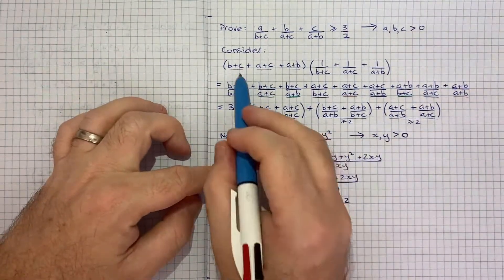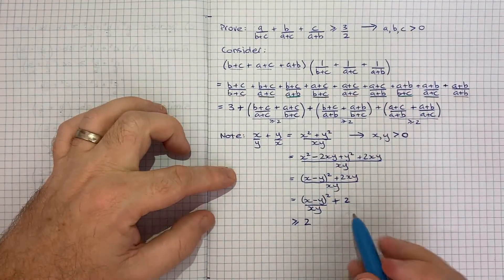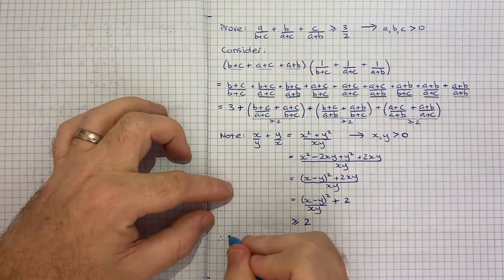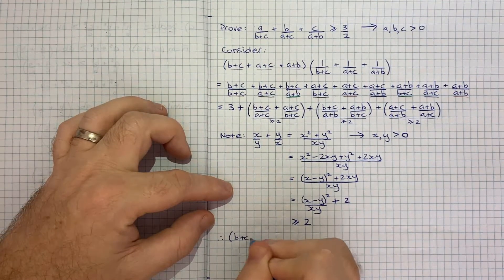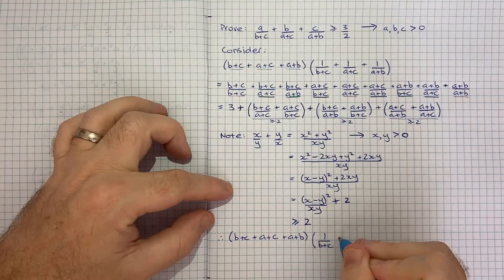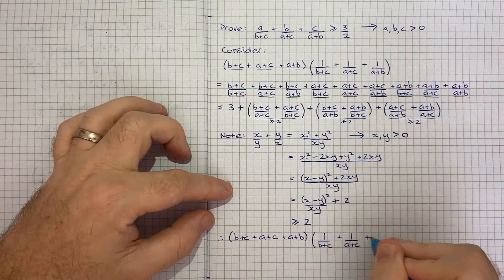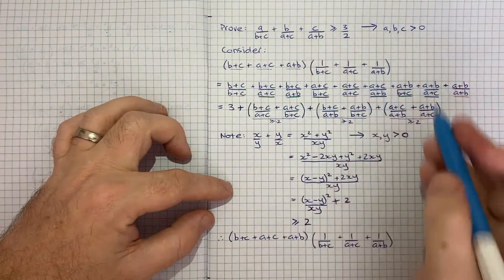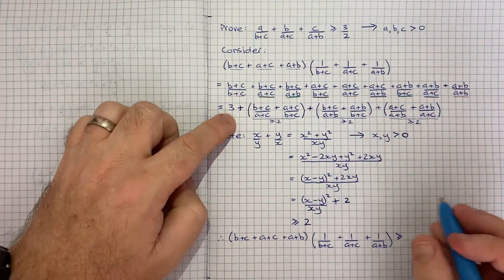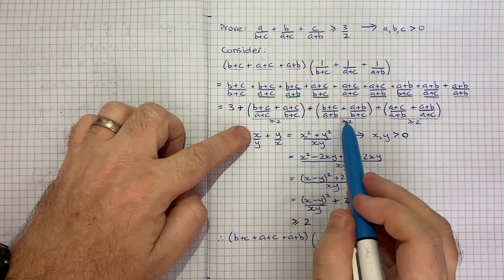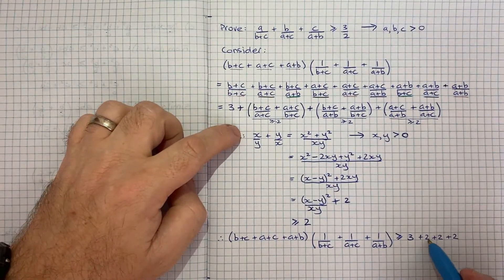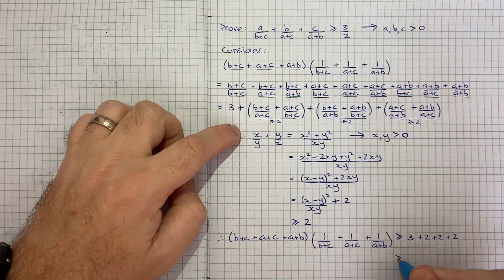Coming back to our starting point, we can now write: (b+c + a+c + a+b) × (1/(b+c) + 1/(a+c) + 1/(a+b)) ≥ 3 + 2 + 2 + 2 = 9. The three comes from the diagonal terms that simplified to 1, and each of the three reciprocal pairs contributes at least 2.